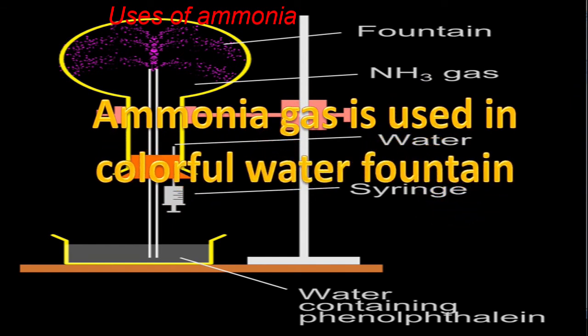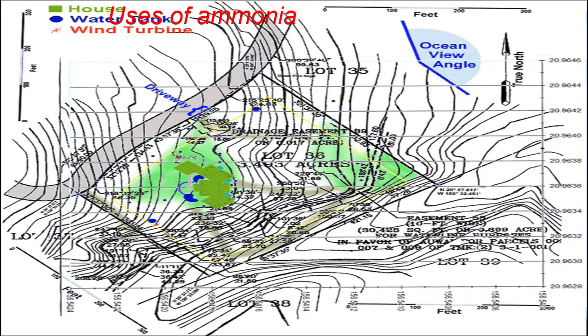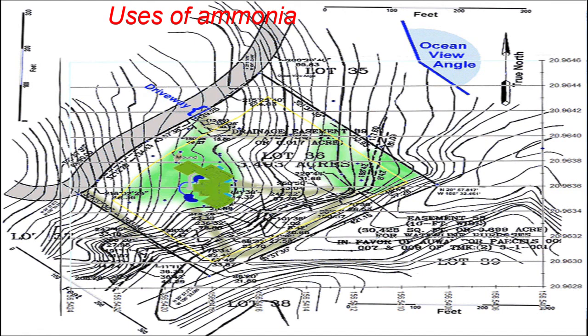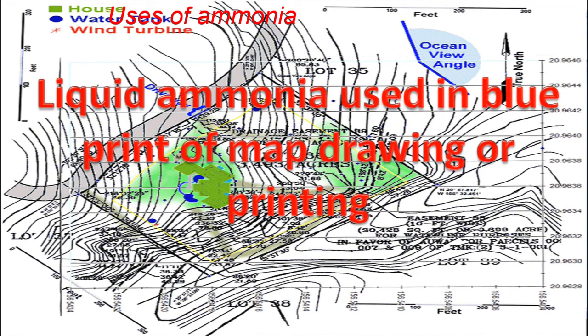When ammonia gas dissolves in water, phenolphthalein changes color to pink. Liquid ammonia is used in blueprints of map drawing or printing.